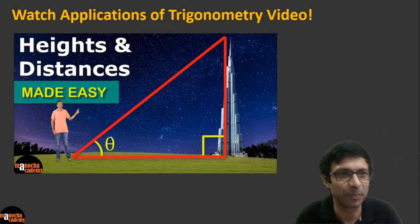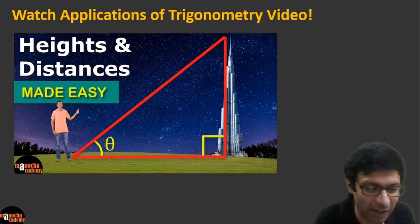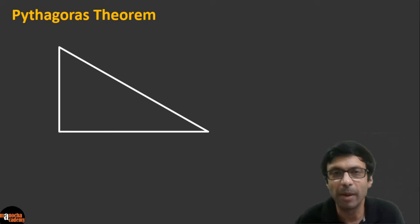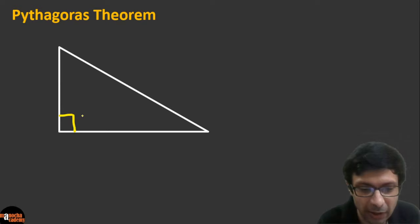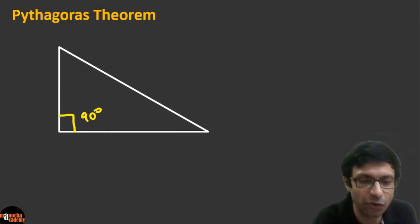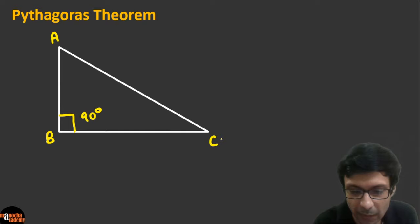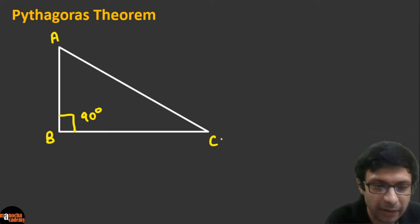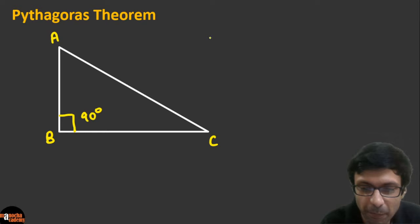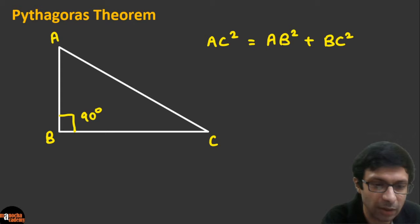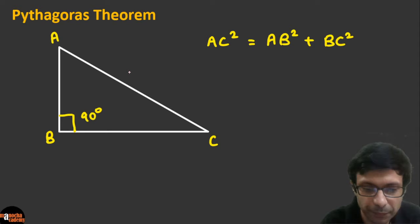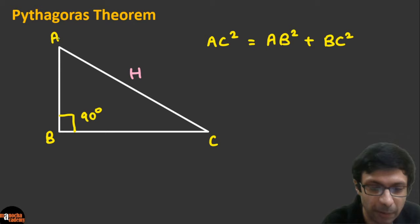Let's go ahead and start the topic. Before we look at trigonometry, remember Pythagoras' theorem. If this is a right angle triangle — where this angle is 90 degrees — and the triangle is marked as ABC, then from Pythagoras' theorem we know that AC² = AB² + BC².